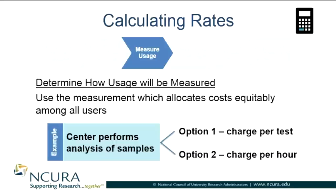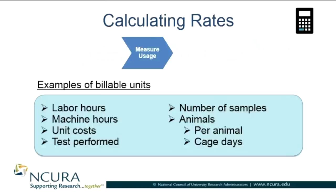In general, if the service is discretely defined with relatively low variability in execution, it makes sense to charge per test. This is easy both for the customer and the center to track, and it also eliminates variability across center personnel who might be providing the services. If you charge by the hour, it better allows for variation in services provided and may also simplify the number of rates that your center is required to maintain.